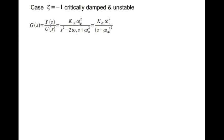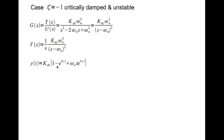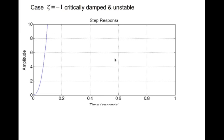The transfer function for zeta equal to minus 1 has a denominator that becomes s squared minus 2*omega_n*s plus omega_n squared, which can be written as (s minus omega_n) squared. Writing Y(s) with U(s) = 1/s for a step, and doing partial fraction expansion and inverting gives the expression for y(t). You get an exponent e to the power of some positive number growing with time — similarly another e to the power of a positive number growing with time — so this is clearly growing exponentially, going towards the positive side.